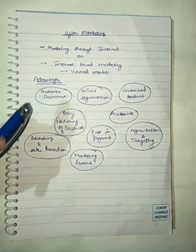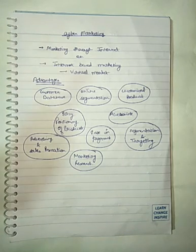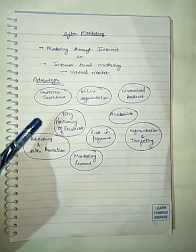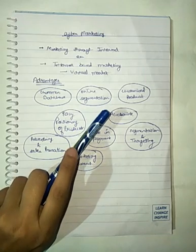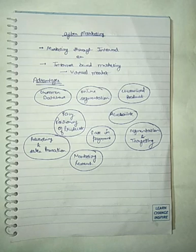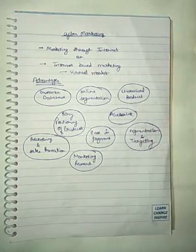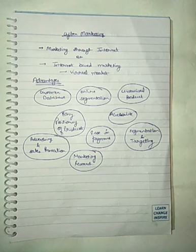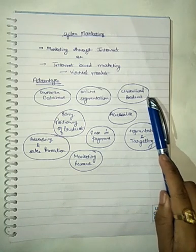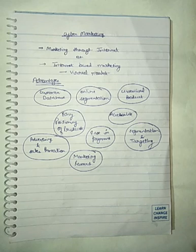Now, what are the advantages of cyber marketing? Customer database: first, the database was recorded in files, but now companies are maintaining customer databases online, reducing the role of paper. Online segmentation: companies can easily segment the market online. Customized products: customers tell their choices online to producers who deliver products as per customer demand. Accessibility: products can reach villages which companies don't normally reach.